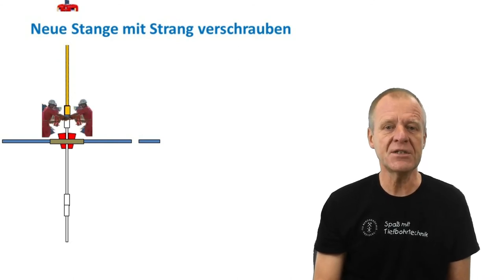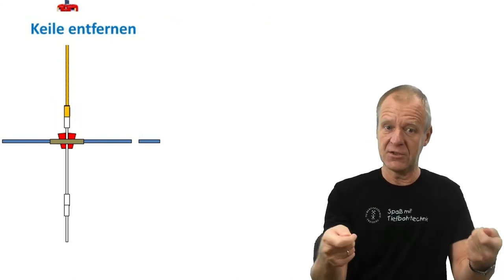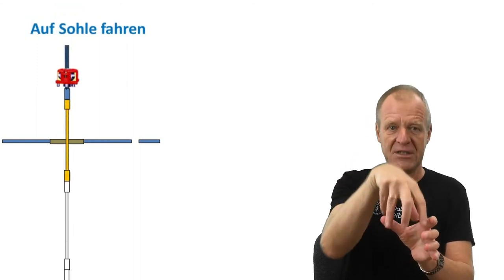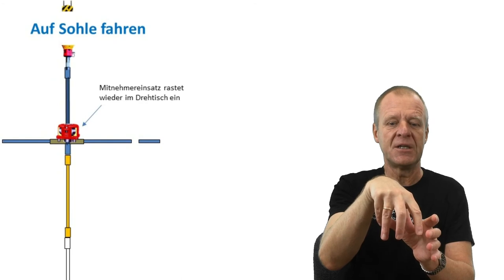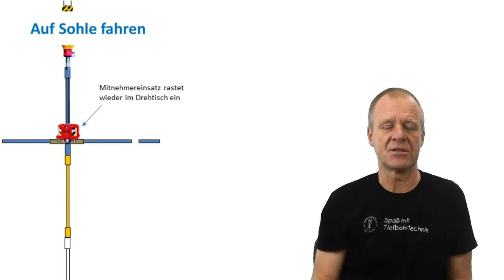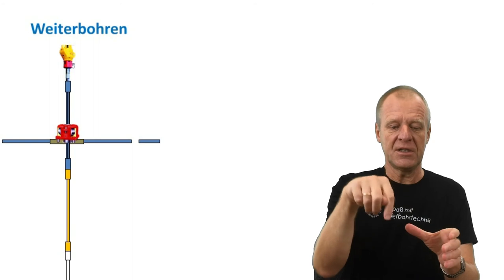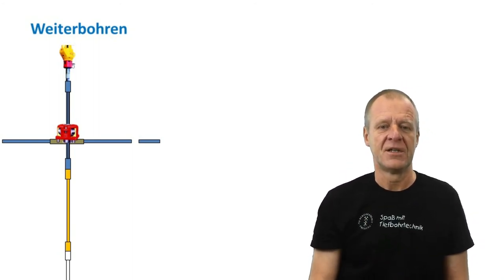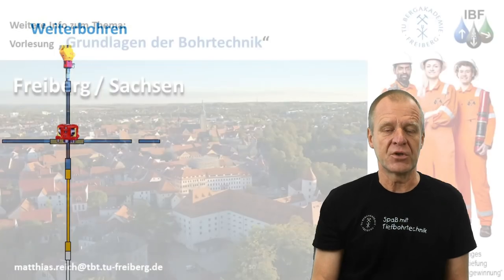Now we can finally pull the slips, lower the Kelly rod onto the Kelly bushing, which fits back into the holes on the rotary table. Then we can start drilling off the length of the Kelly again. This is how a connection is made on the drilling rig.